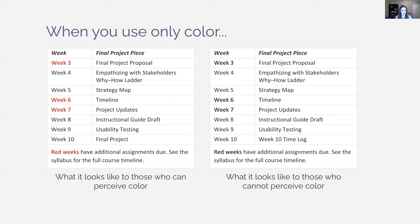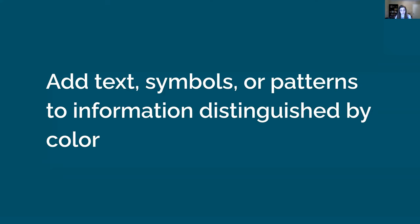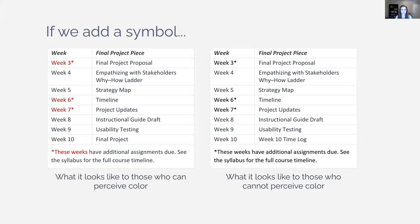For example, here's a project outline table where some weeks are identified by red text, meaning there are other assignments due that week. But for someone who can't perceive color, that meaning literally disappears — it's essentially impossible to tell what the key is referring to. Color can be a great way to present information, but you want to make sure there are other ways to convey that information. The easiest ways are to add text, symbols, or patterns. For example, adding an asterisk to the project timeline means even without seeing the red, you can tell which weeks have other assignments due.